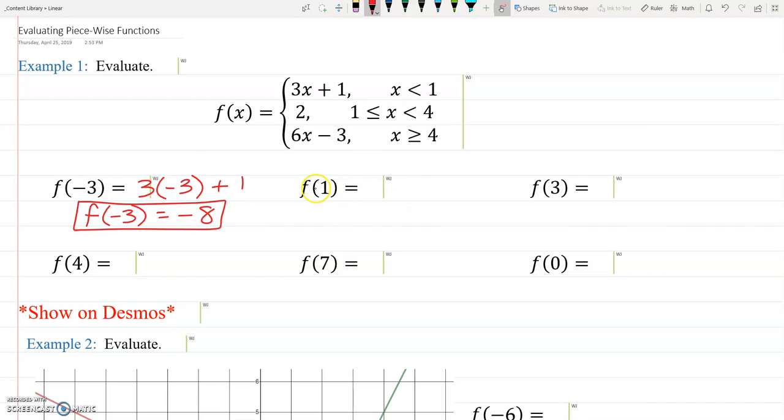Alright, next one. I'm evaluating F of 1. So I've got to look at these boundaries. Yeah, question. Why is there an F in front of that negative 3? This is just notation, how we write things. The question was asking me to evaluate F of negative 3. So my answer is saying F of negative 3 equals negative 8. It's just how we write it, not actually math. There's not F times negative 3 or anything like that.